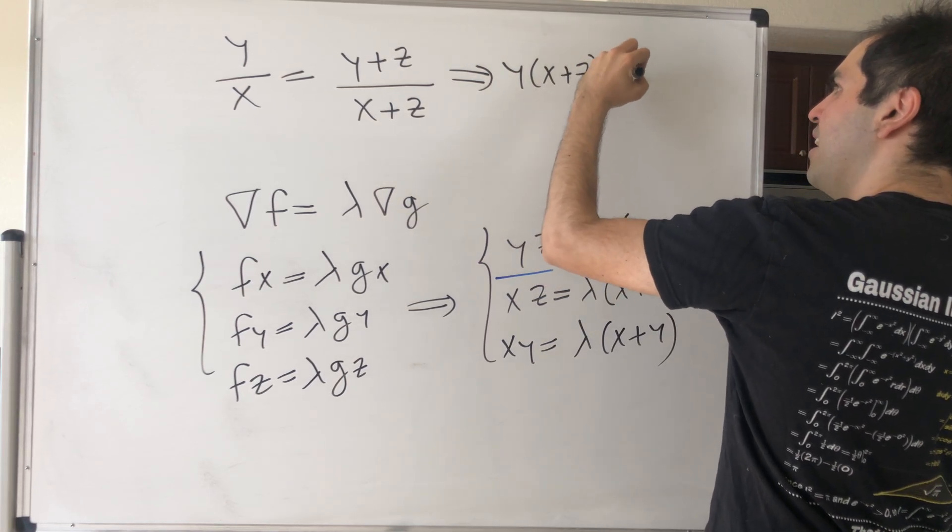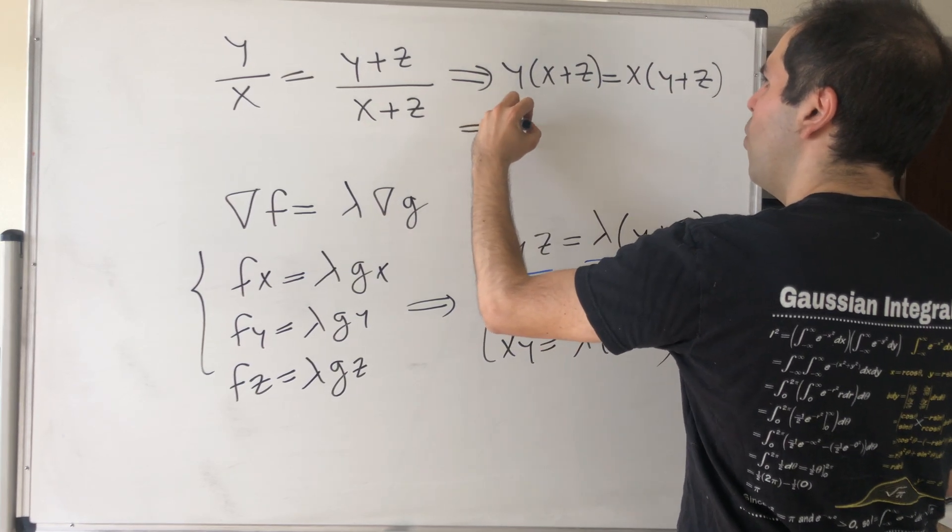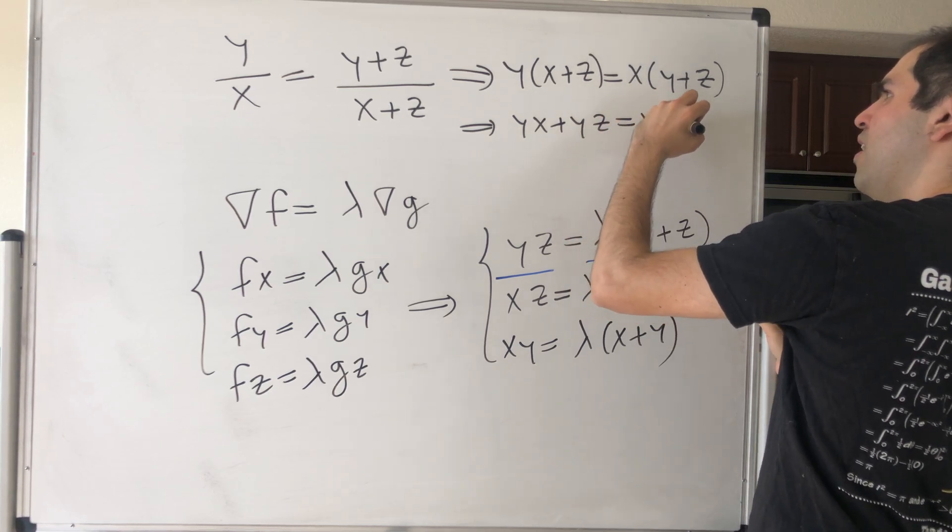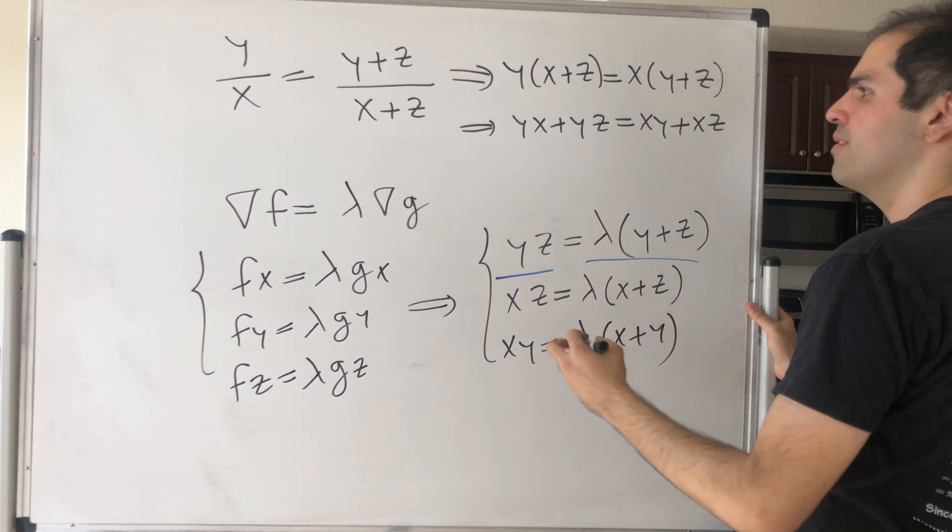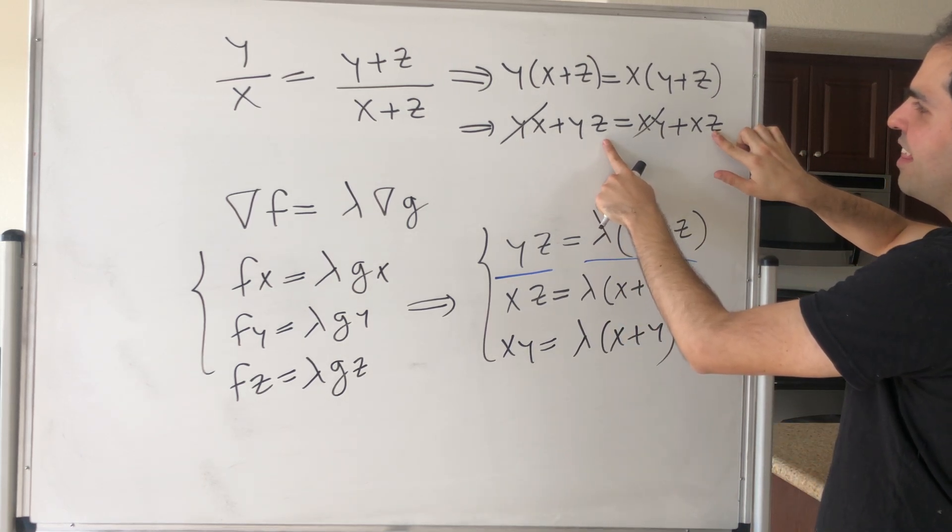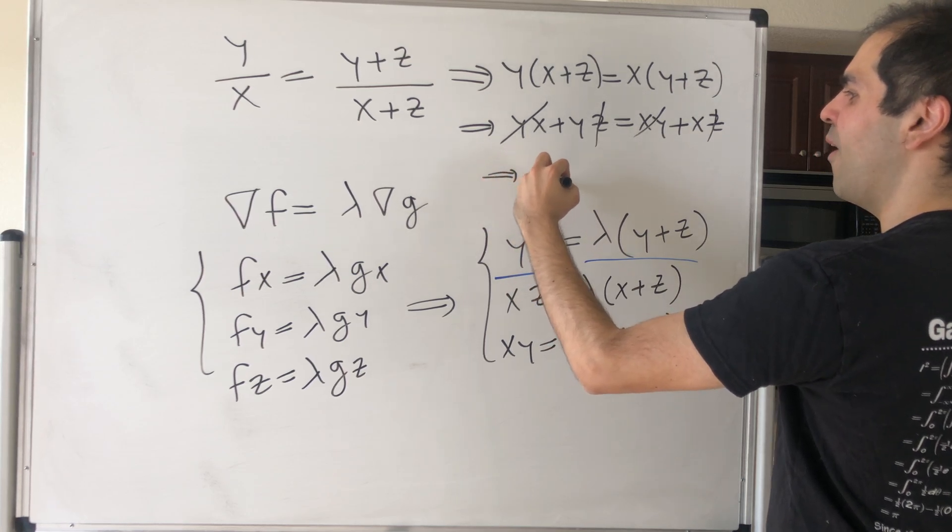Now let's cross multiply. Y times (x plus z) equals x times (y plus z). Then we get yx plus yz equals xy plus xz. The xy's cancel out, and not only that, the z's cancel out, and you ultimately get that y equals x.